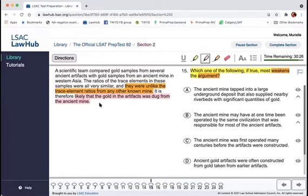Is it still likely that the gold in the artifacts was dug from the ancient mine? Or does this potentially present an alternative to that theory? So in that case, it would actually weaken it. So we're kind of looking to eliminate things that strengthen for sure, but we also want to eliminate things that don't have that much of an impact on the argument, that are largely irrelevant to the argument.